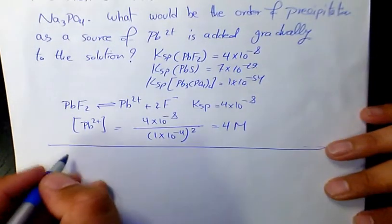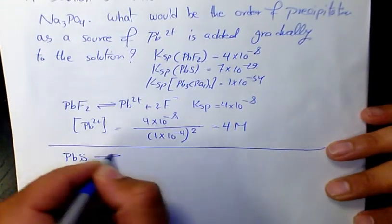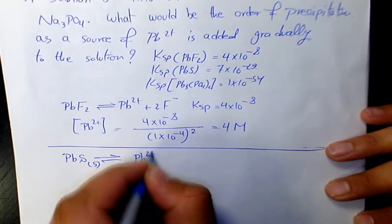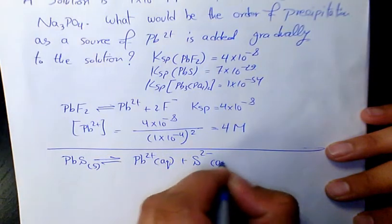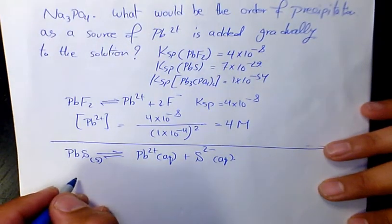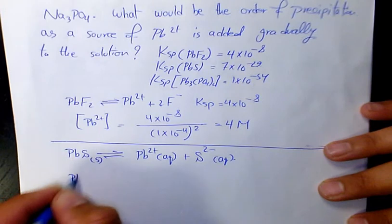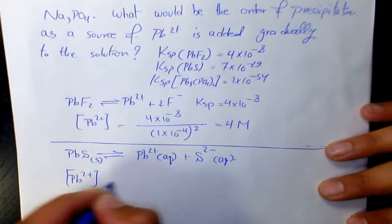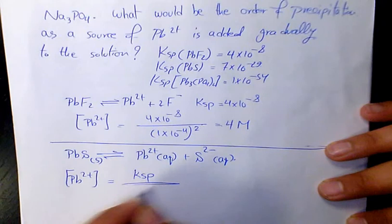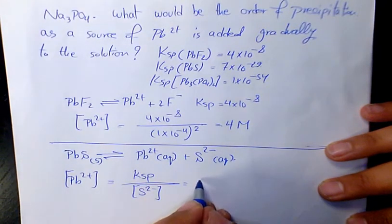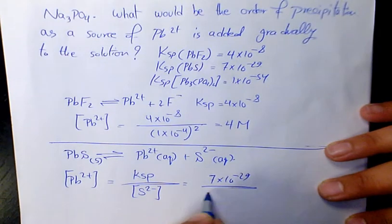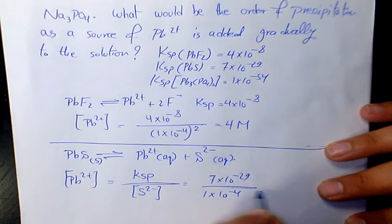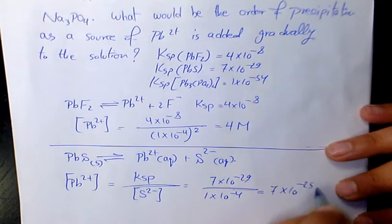Now, the second one — PbS. When it dissolves, it's going to produce Pb²⁺ in aqueous phase plus S²⁻ in aqueous phase. That gives Pb²⁺ equals Ksp divided by the concentration of sulfide. The Ksp is 7×10⁻²⁹ divided by 1×10⁻⁴, which gives 7×10⁻²⁵ molar.